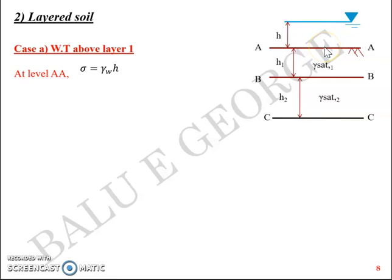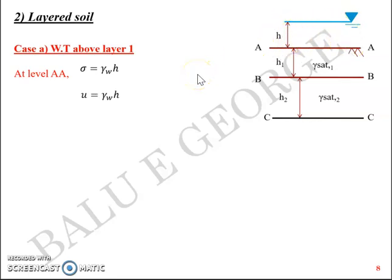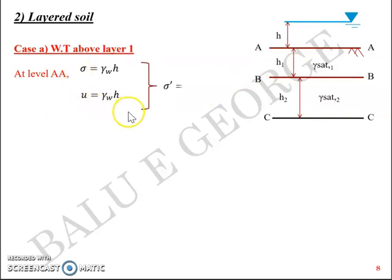What is the neutral stress U at level A? When you talk about neutral stress you need to think about the height of the water table above your target level. In this case that height is h. So U equals gamma_w into h. Total stress is gamma_w*h and neutral stress is also gamma_w*h. So effective stress sigma dash equals sigma minus U, which equals 0.